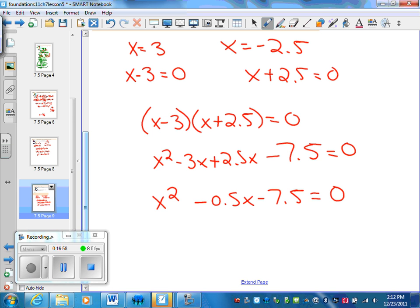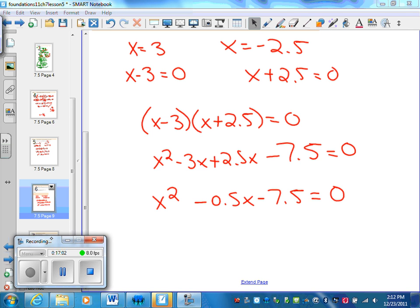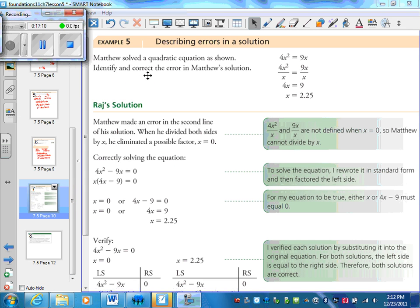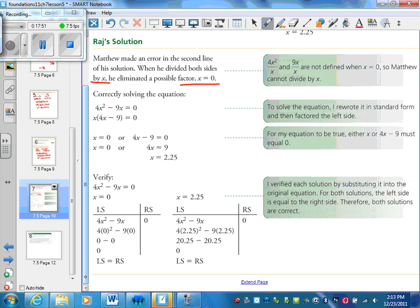One more mistake that I'm scared you guys are going to make. So we have Matthew here. He's solving a quadratic equation as shown. Identify and correct the errors. He said 4x squared equals 9x. We divided both sides by x. 4x equals 9, x equals 2.25. The error that he made, he divided both sides by x. What he did is he eliminated the factors. So in general, you cannot, cannot, cannot divide by a variable. So correctly solving this equation, he should have factored out that x, set each factor to 0, and get his answer and verify. The rule is do not divide by x. Do not divide by any variable. Not allowed.